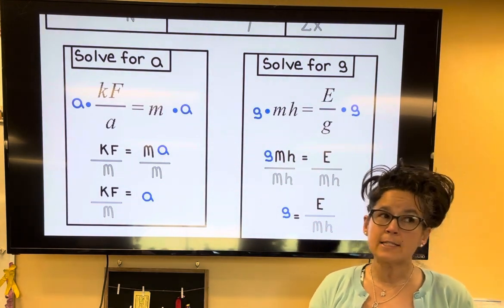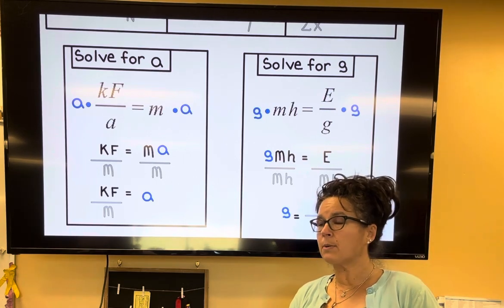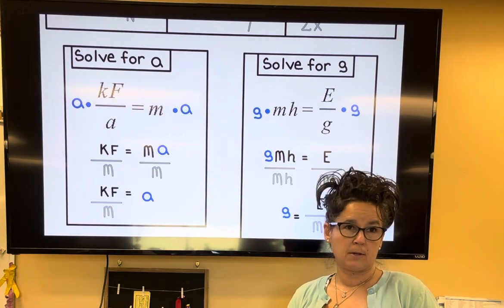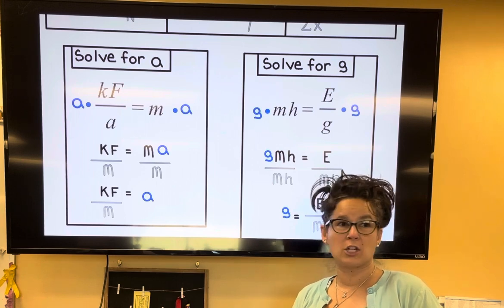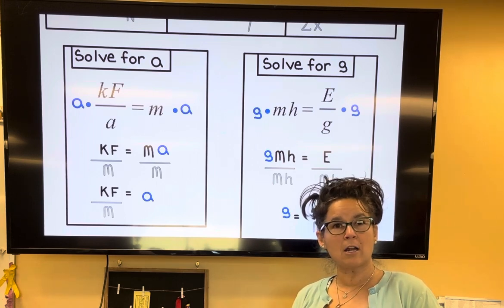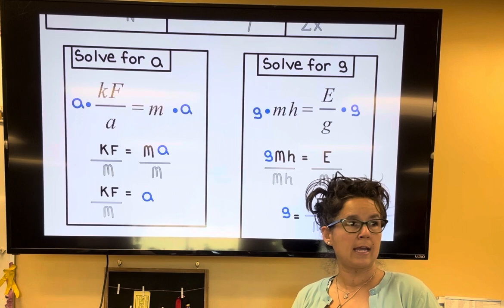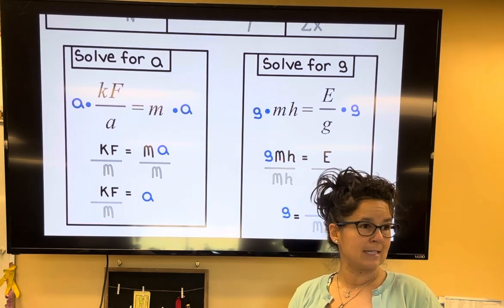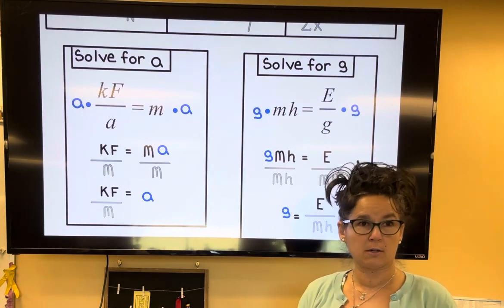There are other ways that you could solve these, but a great first step: when you see an equation that has a fraction, if you multiply both sides by the denominators, the fractions go away. And usually for students, it's easier to solve once the fractions are gone.